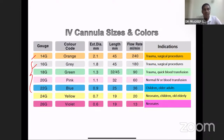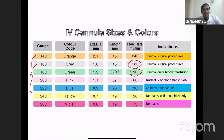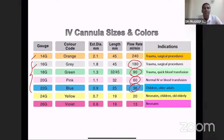Moving on to flow rates: gray (16G) is 180 ml/min, green (18G) is 90 ml/min, pink (20G) is 60 ml/min, and blue (22G) is 36 ml/min. These four values you just have to memorize.